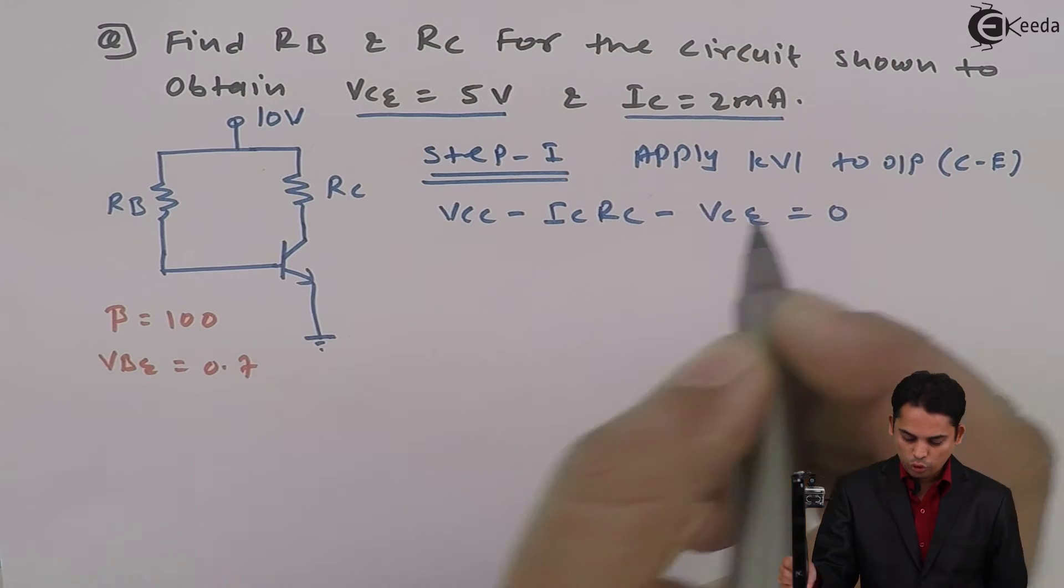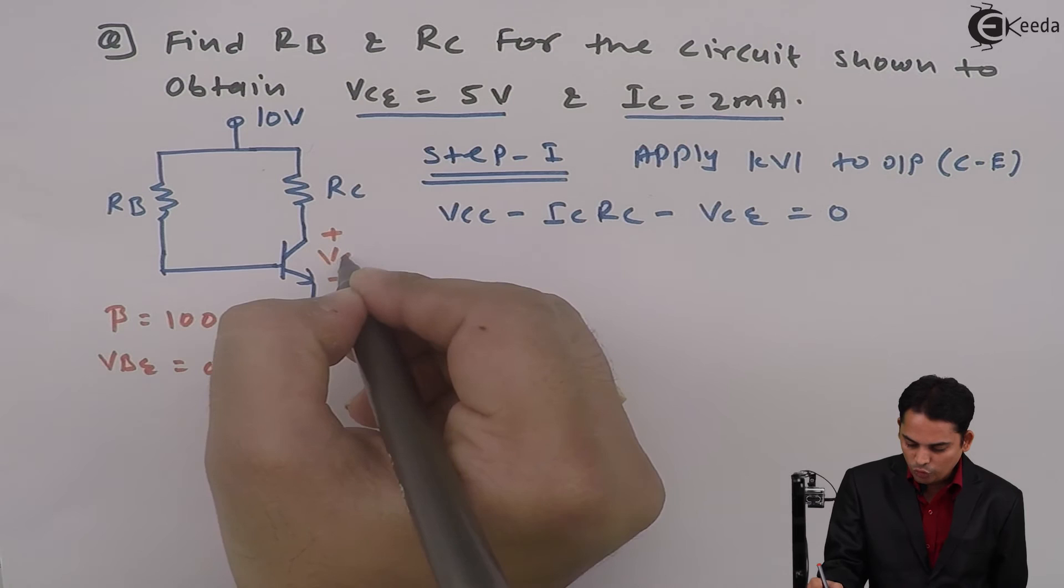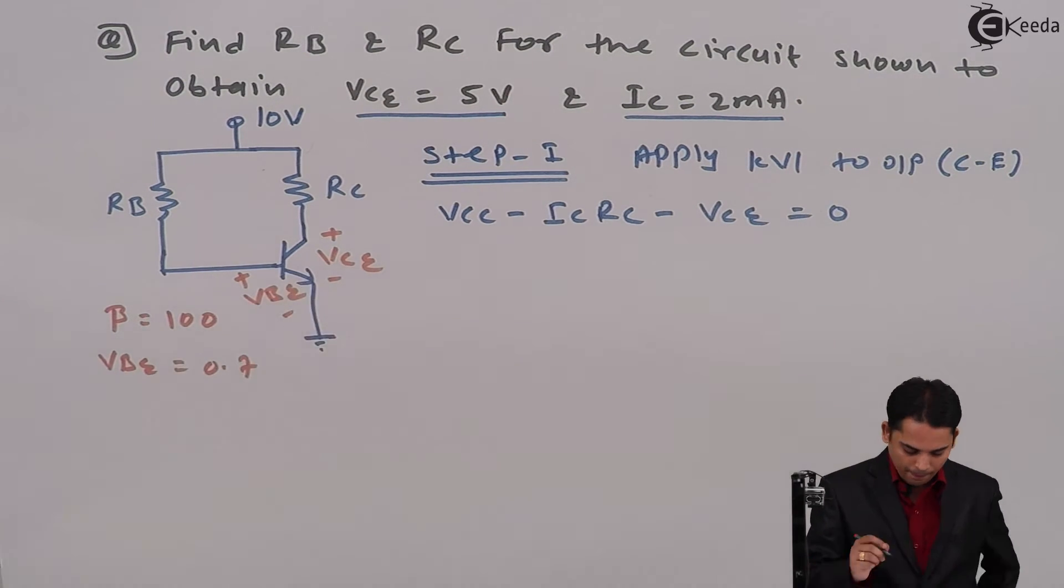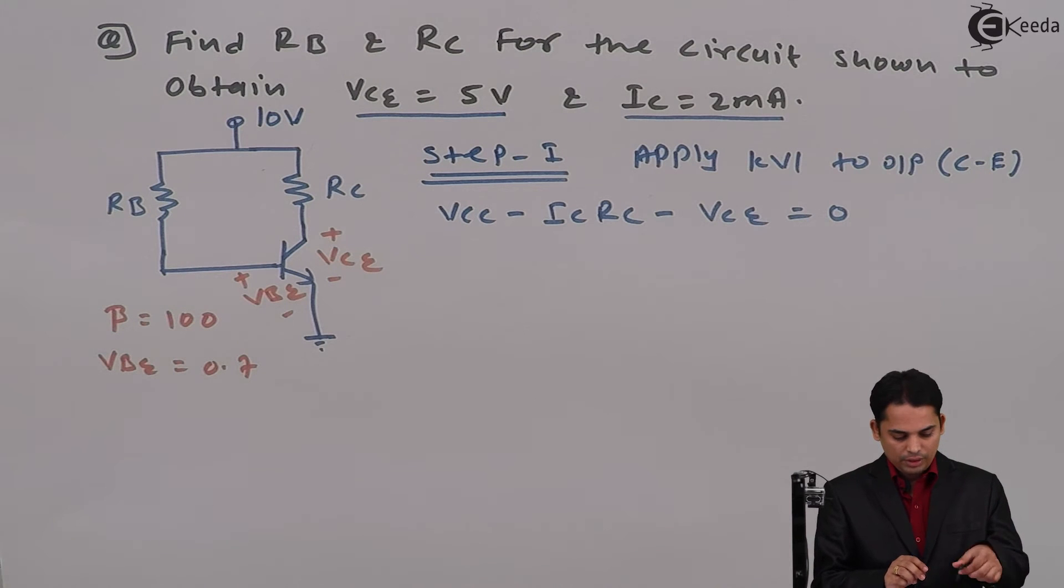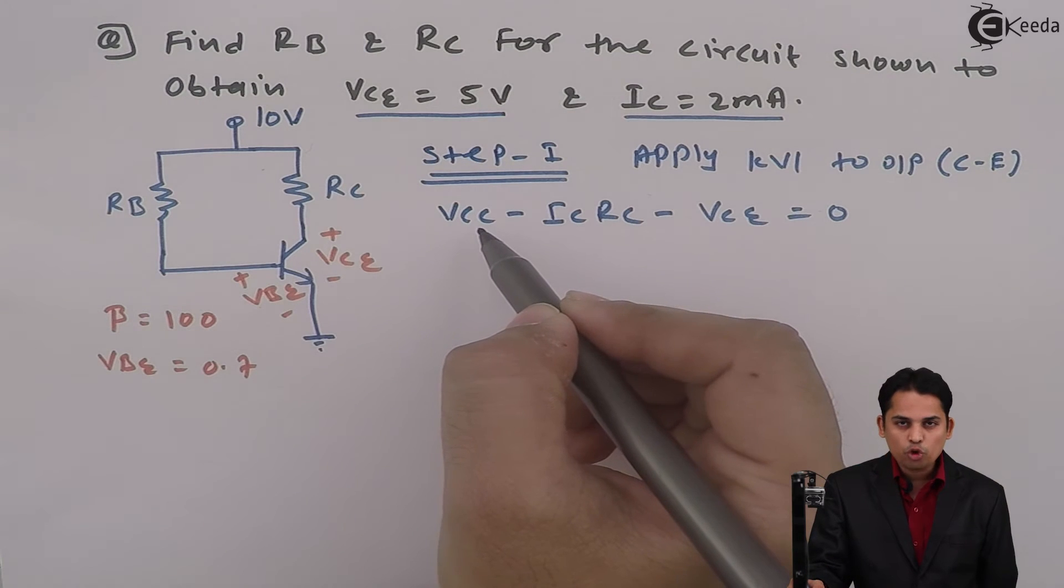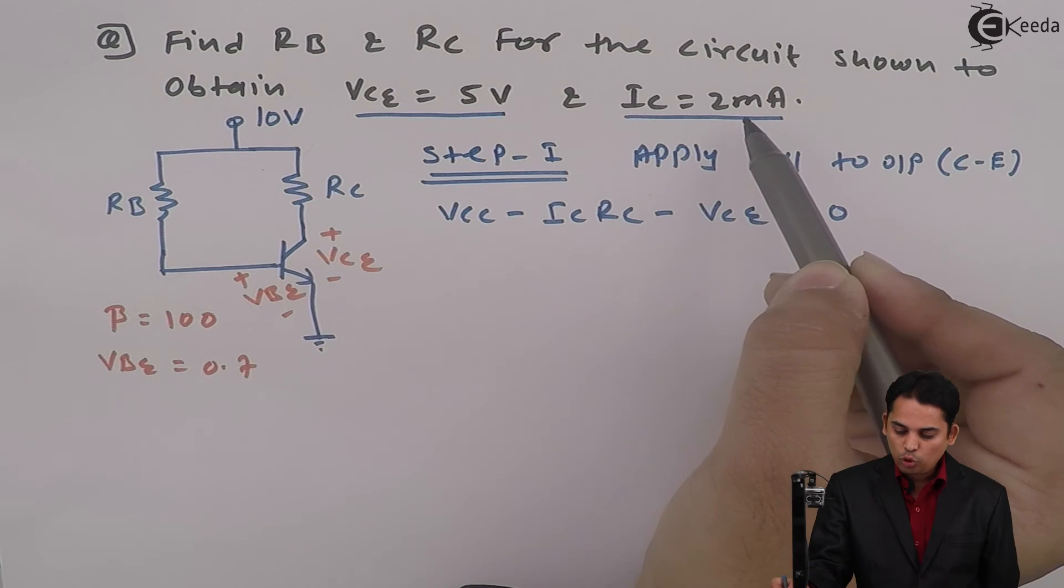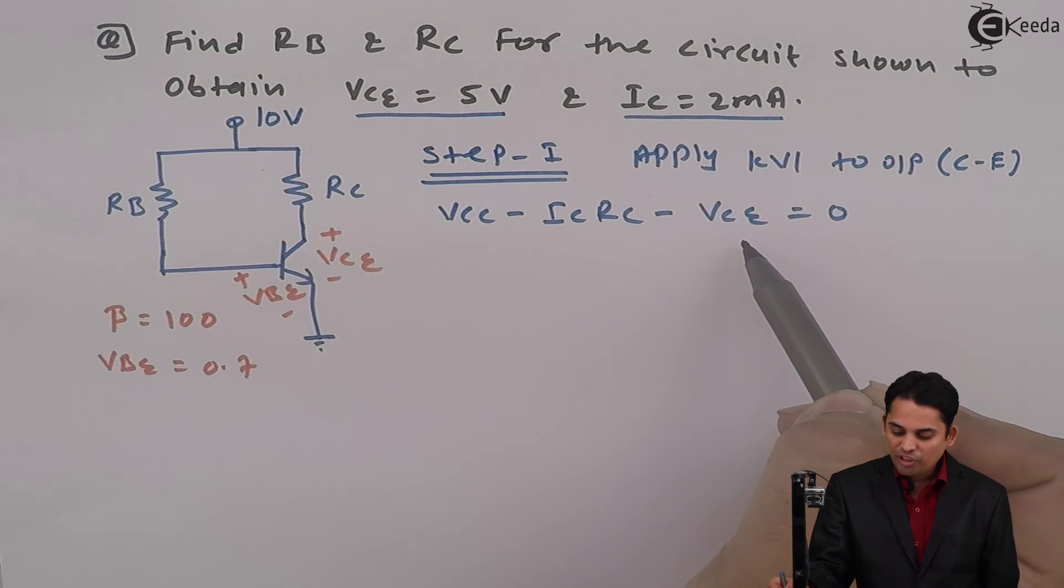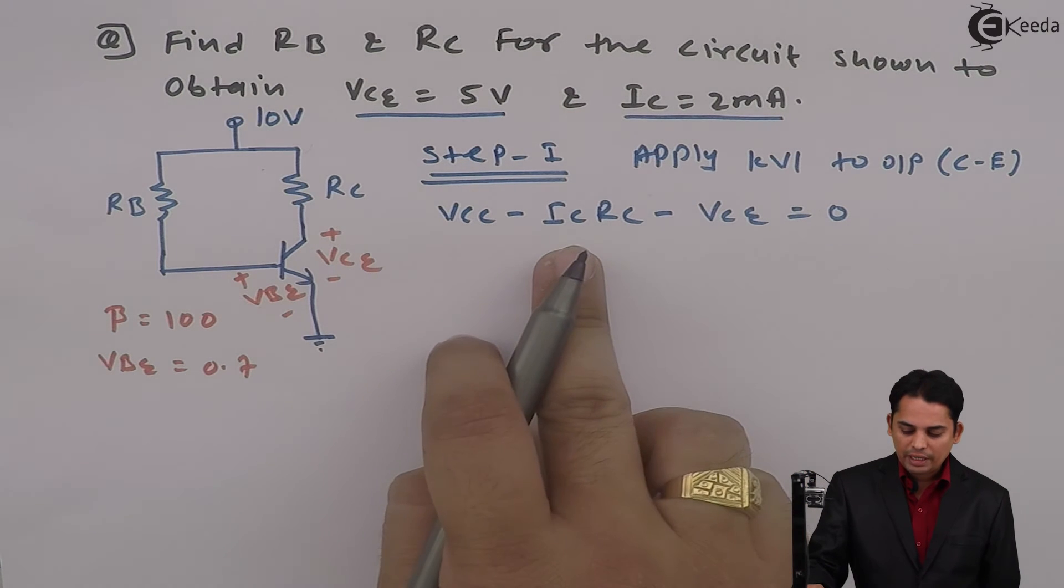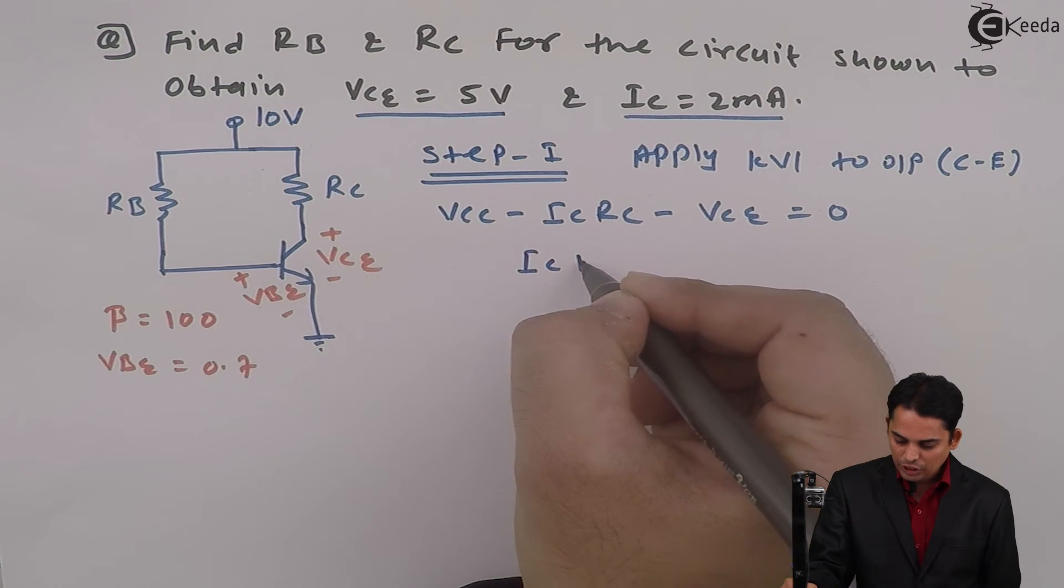So the equation will become VCC - IC·RC - VCE = 0. The voltage between these two points is VCE, and between these two points is VBE. Now the value of VCC is known, which is 10 volts, the value of IC is known, which is 2 milliamperes, and the value of VCE is also known, which is 5 volts.